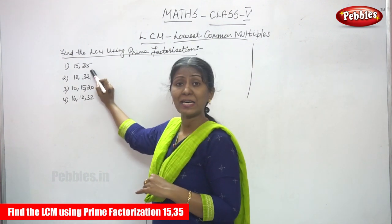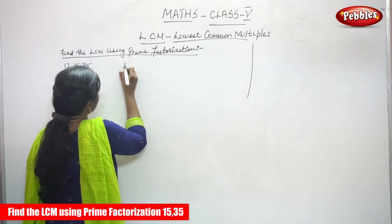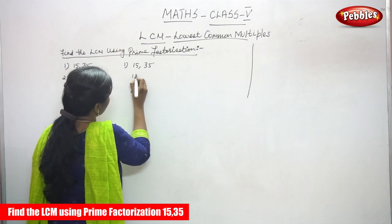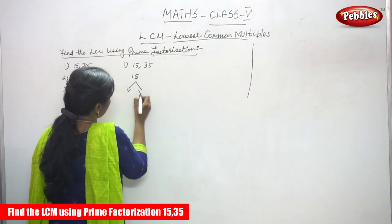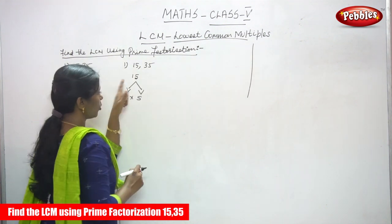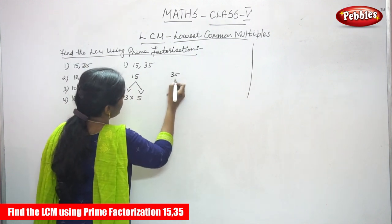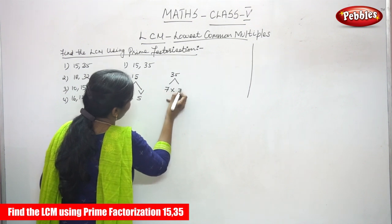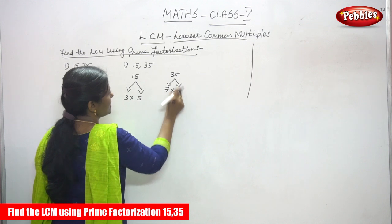The first sum is 15 and 35. You need to find the factors. For 15, that is 3 into 5 — you will get 15. And for 35, that is 7 into 5 — you will get 35.